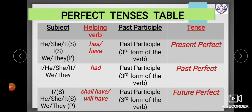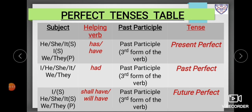For past perfect tense, with subjects I, he, she, and it, we use the helping verb 'had'. When 'we' and 'they' are used as subjects, we also use 'had'. So when we add the helping verb 'had' before the past participle, or the third form of the verb, we get past perfect tense.